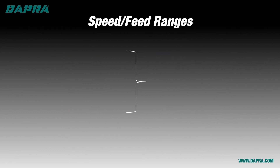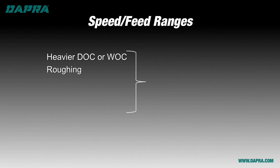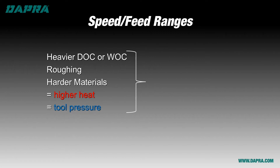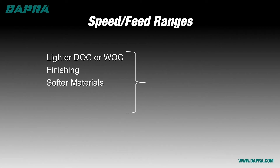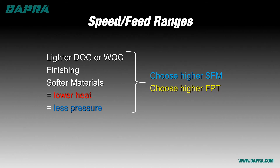To summarize briefly: if your application involves heavier cuts or machining harder materials within a material type, expect higher heat and higher tool pressure. To protect against this, select a lower speed in SFM and a lower feed per tooth, at least in the beginning. If your program involves a lighter cut — as with finishing cuts — or softer material within the ISO group, expect less heat and less tool pressure. As such, you should be able to program your tool to a higher speed and higher feed within the recommended ranges.